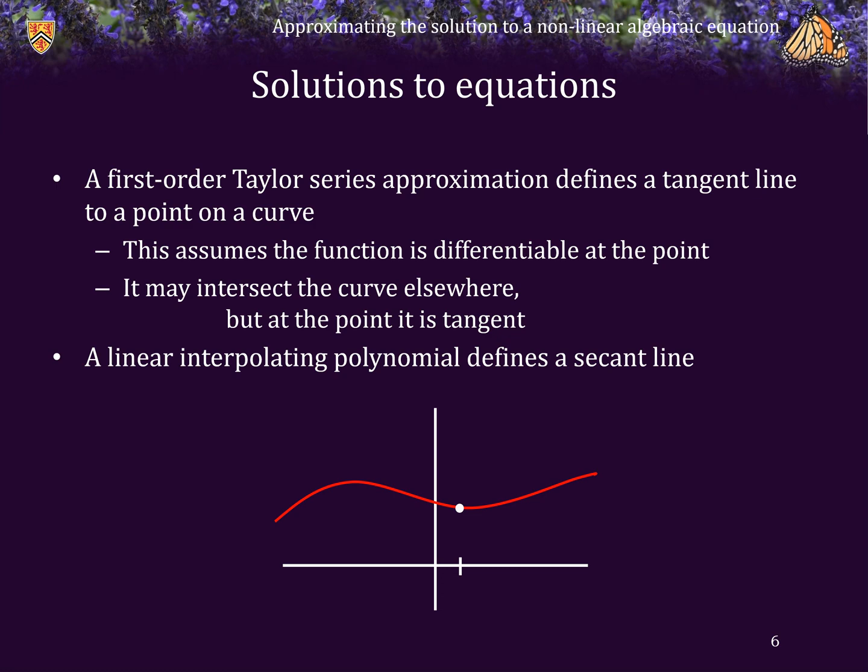A linear interpolating polynomial, on the other hand, defines a secant line. So, if we have two points, as we see here, and we find a linear interpolating polynomial, that linear interpolating polynomial intersects the curve at two points, and therefore, that defines a secant line.